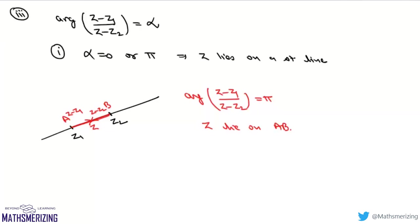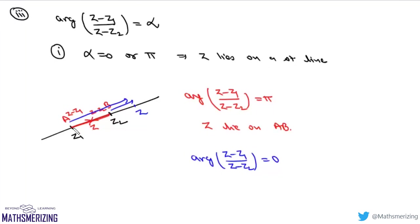If z lies outside segment AB, and we look at arg((z - z₁) / (z - z₂)) = 0, then z will lie on the line AB except for the points lying between A and B. So if the argument is π it represents all points between A and B, and if it is 0 it represents all points on the line except those between A and B.